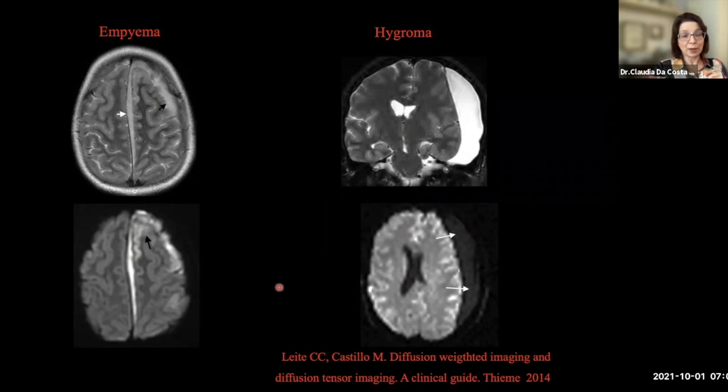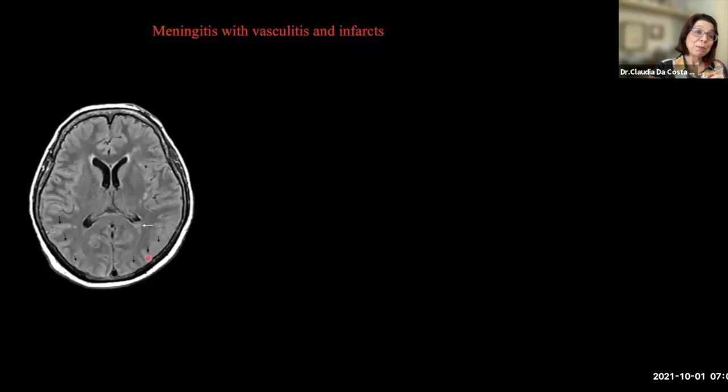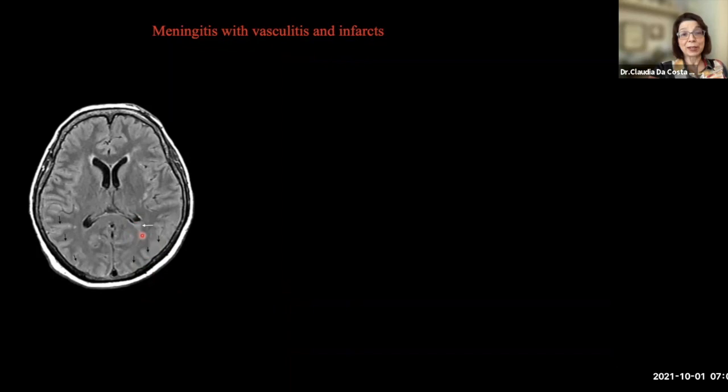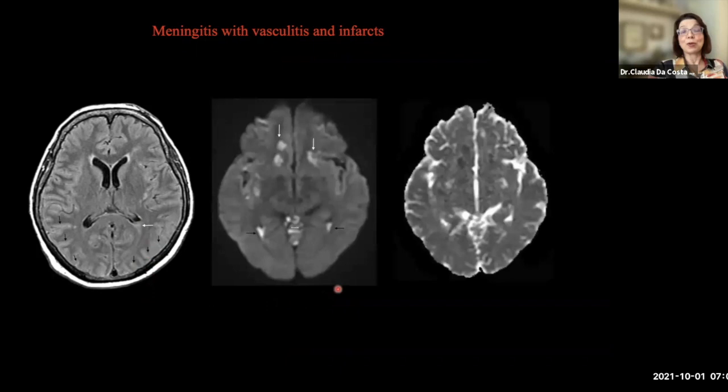On another case on the enhanced FLAIR, we can see very subtle meningeal enhancement and obliteration of the posterior part of the lateral ventricle. On diffusion-weighted imaging, we can see the ventriculitis — there is pus content in the posterior part of the ventricles. We can also see ischemic lesions in the cerebellum and basal ganglia and insula due to vasculitis with secondary infarcts.